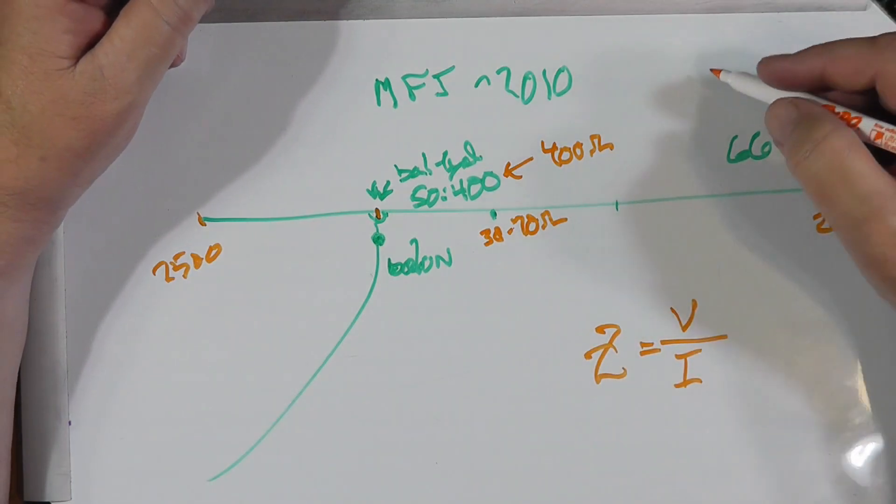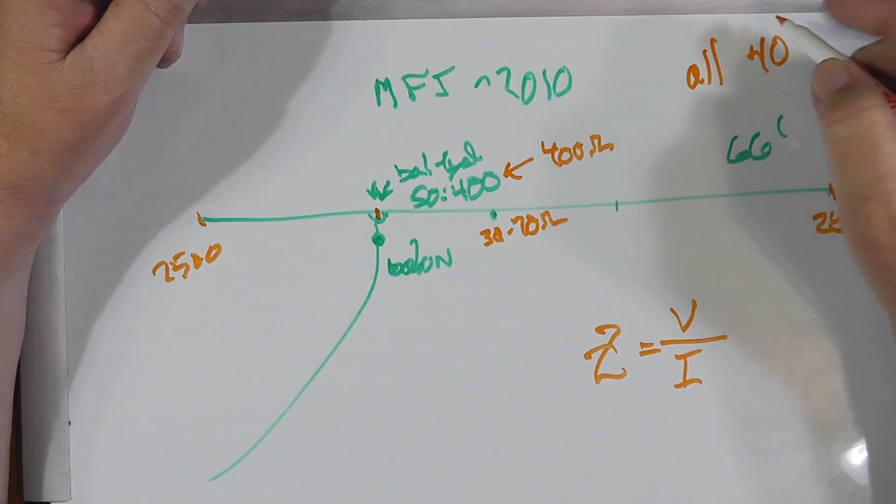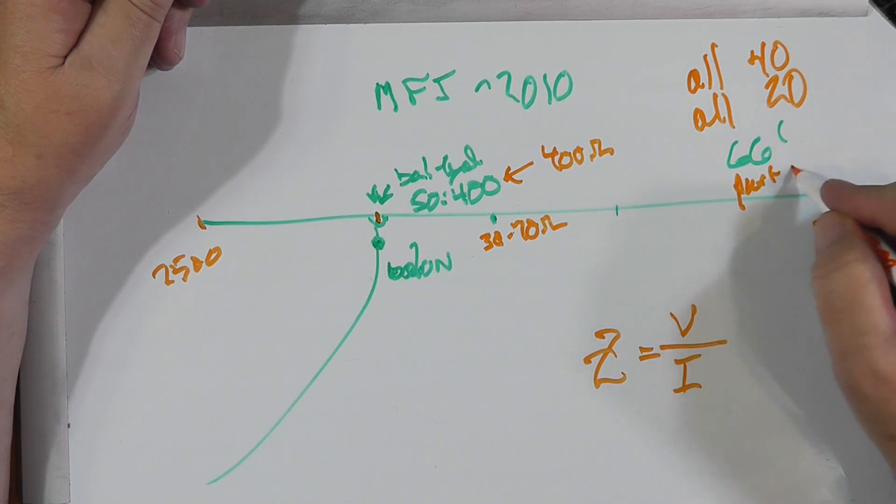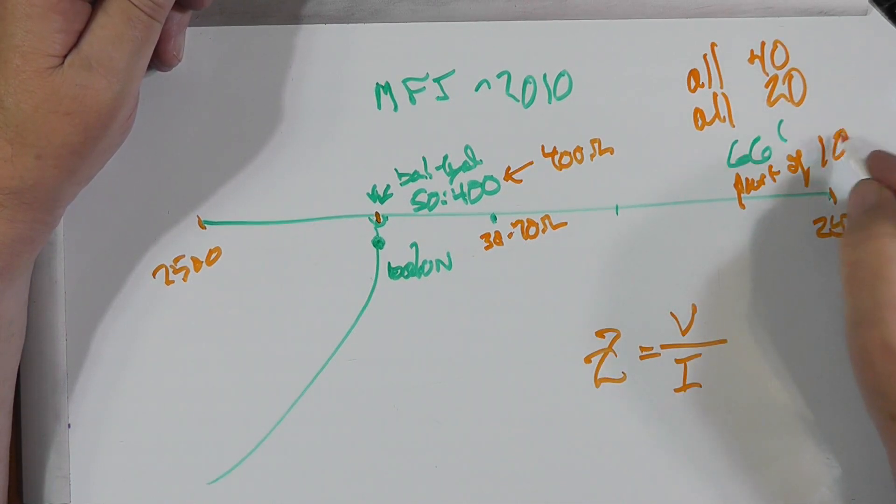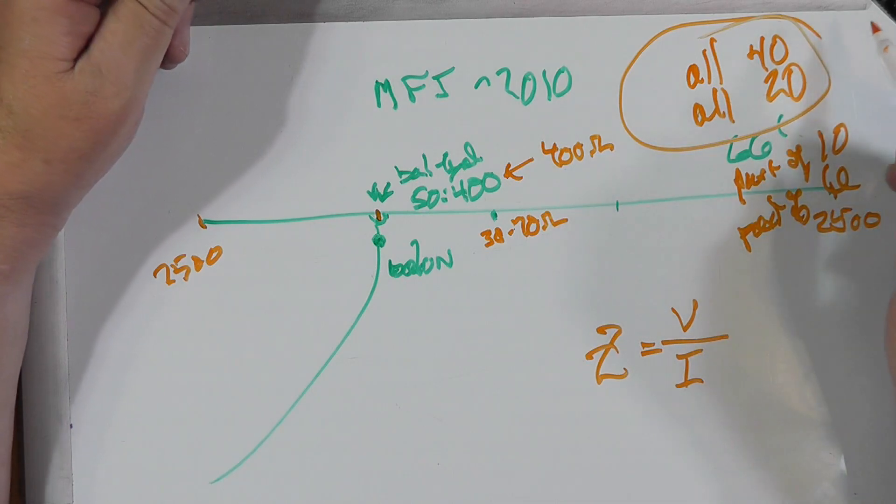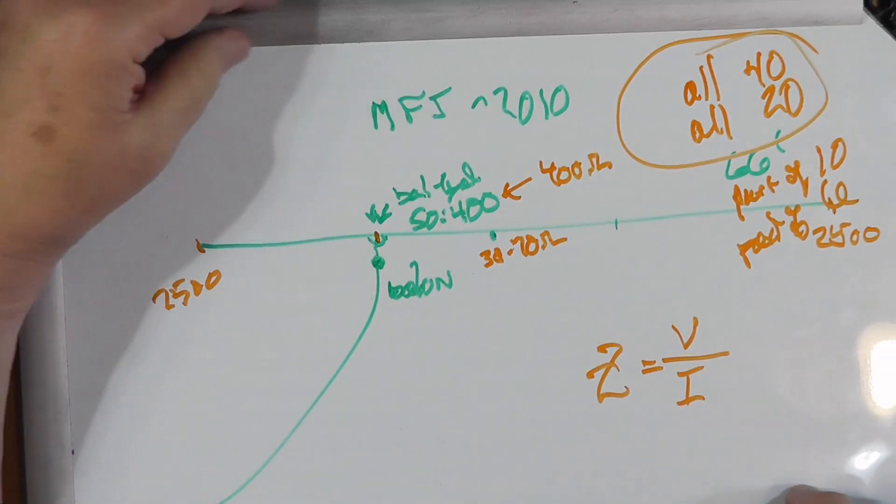Now, the MFJ 2010 covers all of 40, all of 20. That's all I really care about, but it also covers part of 10 and part of 6. These are your real workhorse bands. As a new general, by new, I mean less than 10 years, you can always wander off into other things where you will want another antenna, but for a good foolproof first antenna, the MFJ 2010, which is what, 70 bucks, it's pretty cheap.